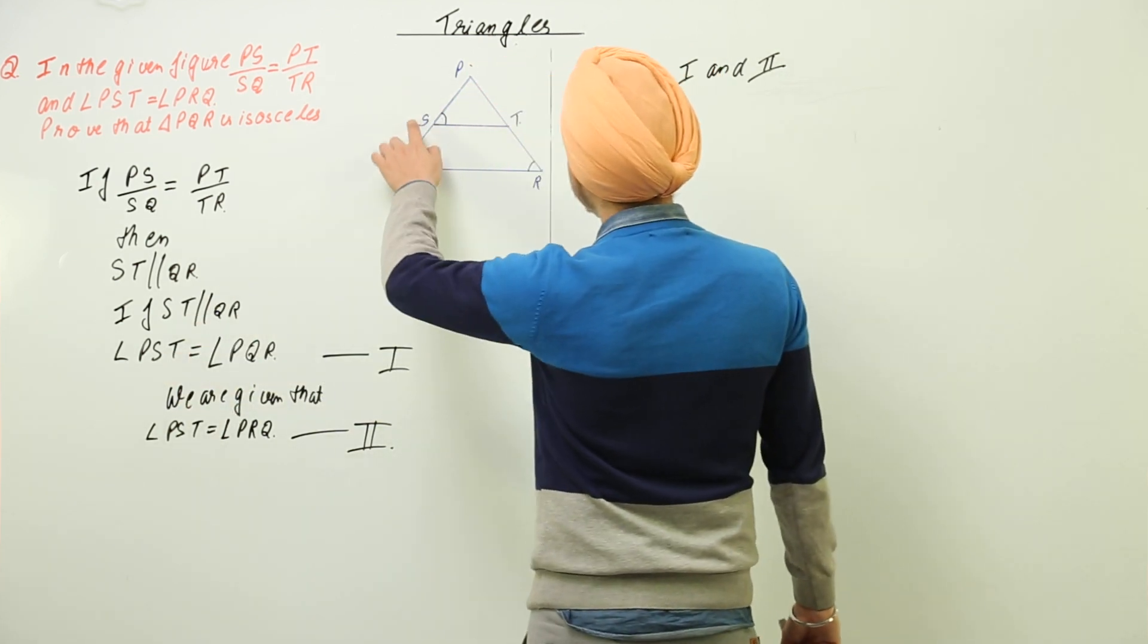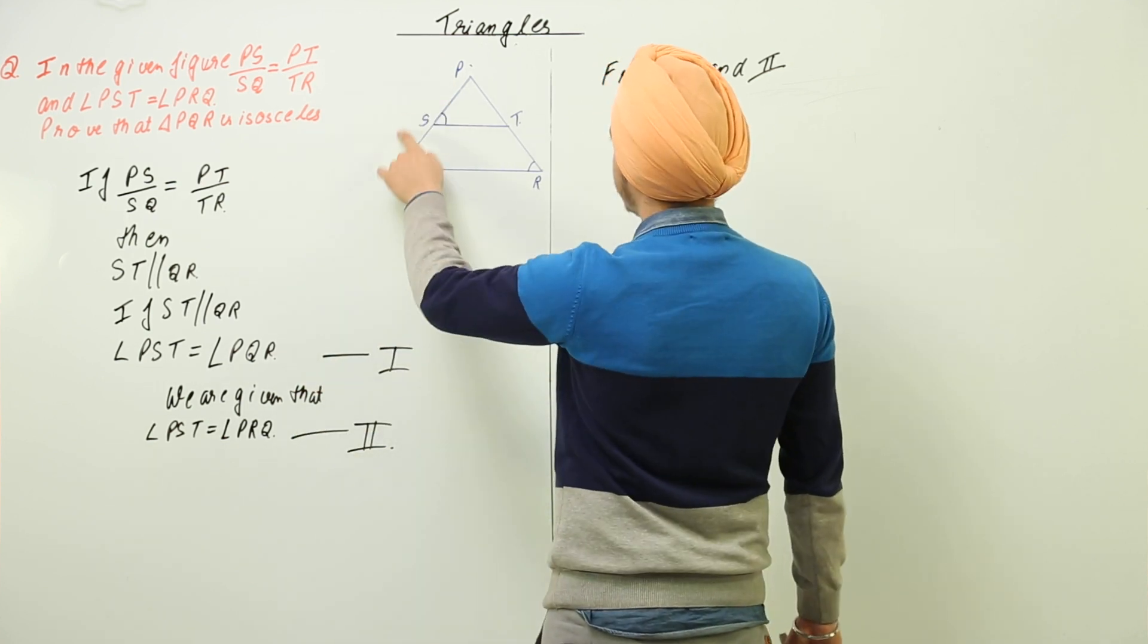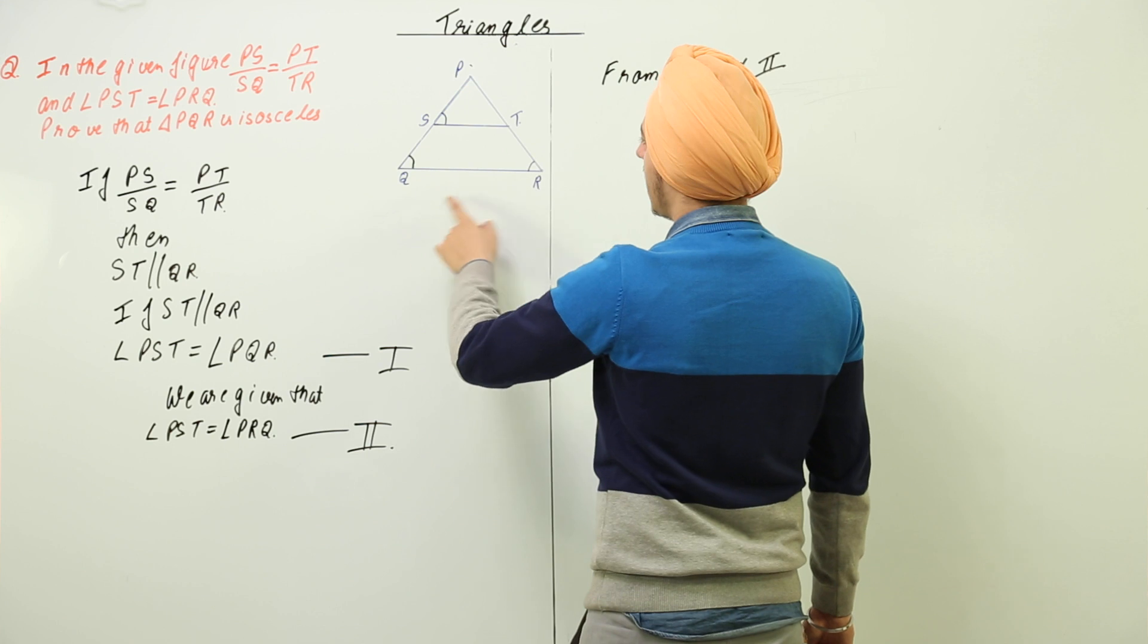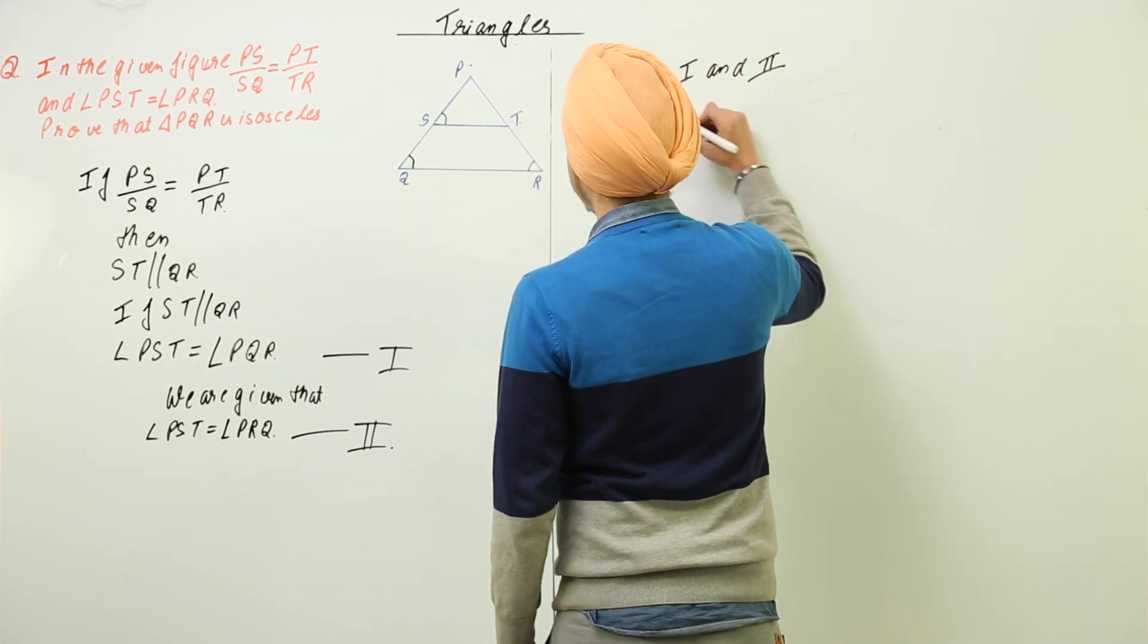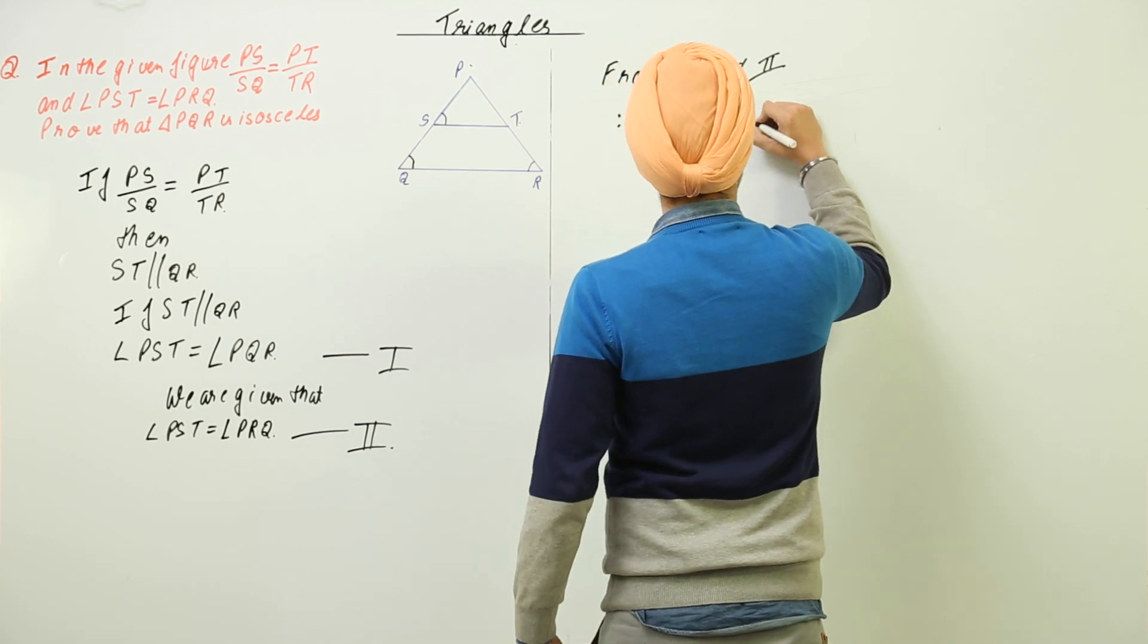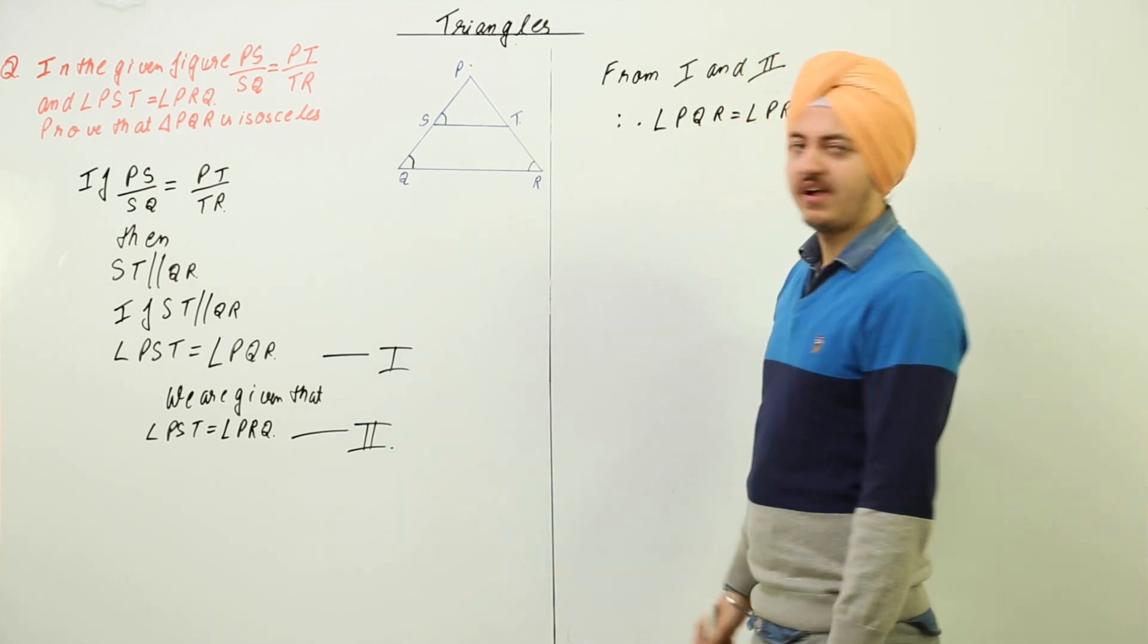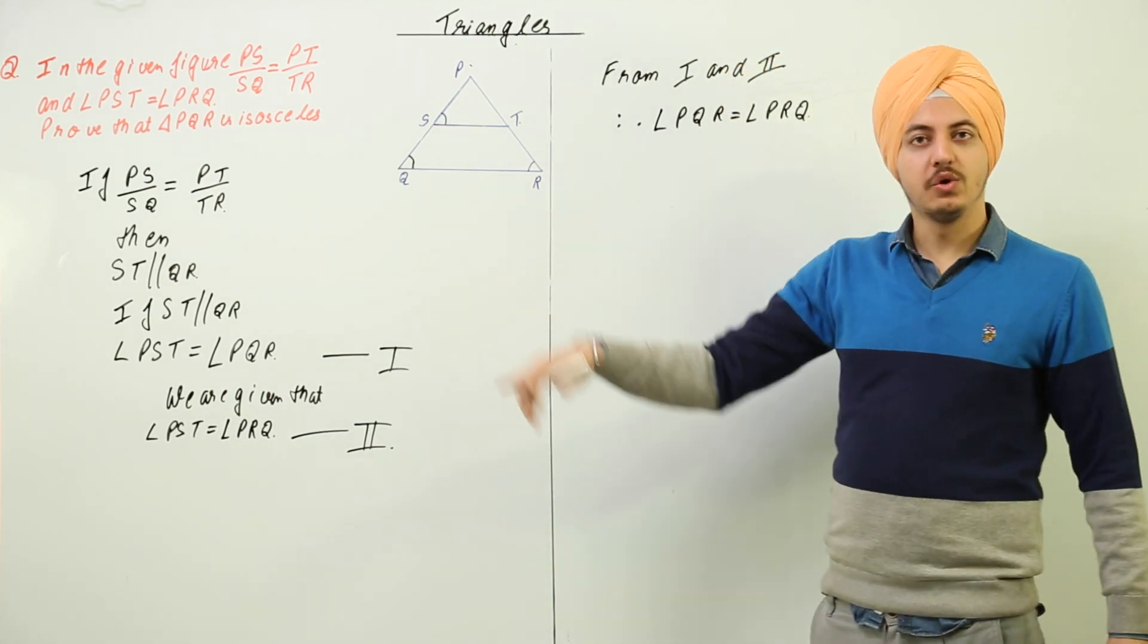Angle PST is equal to angle PQR, and in this angle PST is equal to angle PRQ. Therefore, angle PQR is equal to angle PRQ. If angle PQR is equal to angle PRQ.